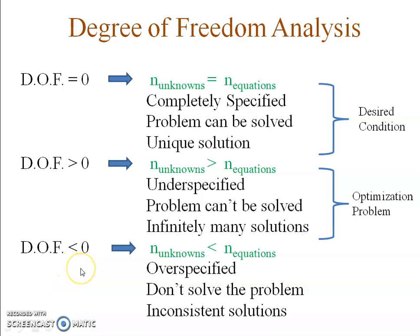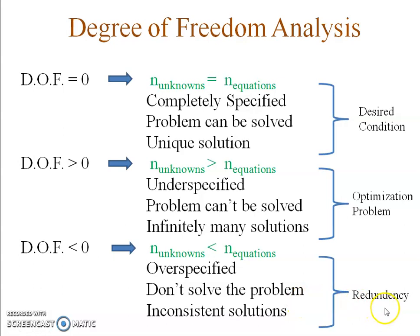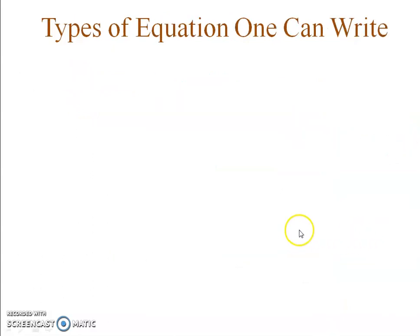The third case is when degree of freedom is less than zero — the number of unknowns is less than the number of equations. Such problems are over-specified. Do not solve them, because depending on which equations you use, you will get different inconsistent solutions. In material and energy balance, we only solve problems where degree of freedom equals zero; otherwise we state the problem is either under-specified or over-specified.